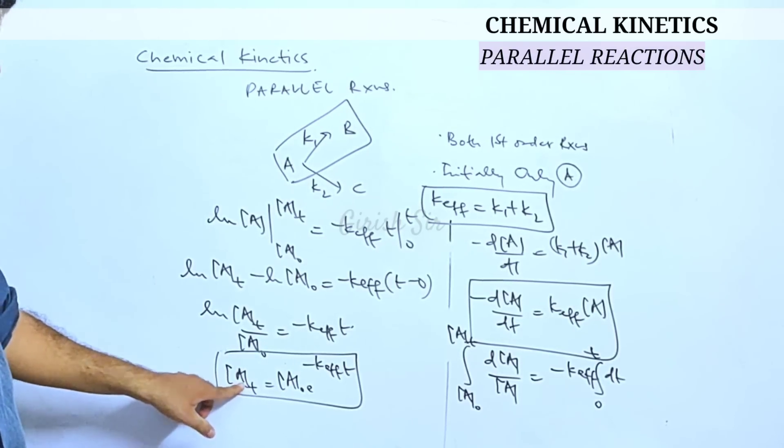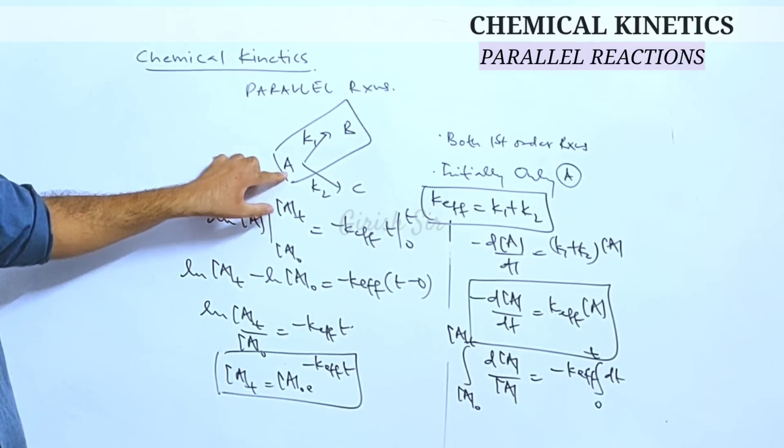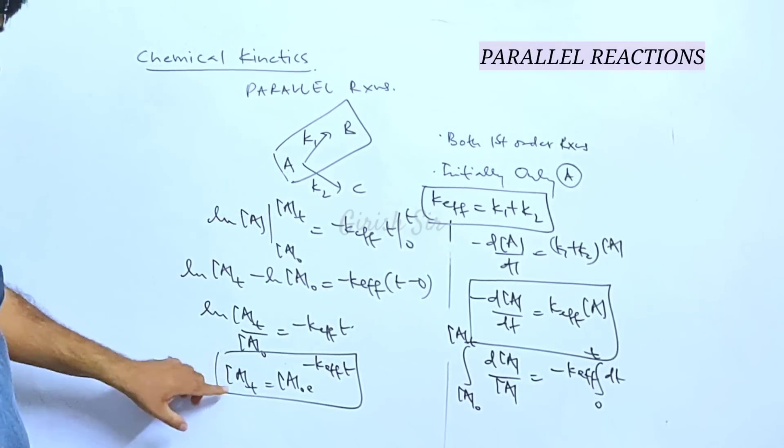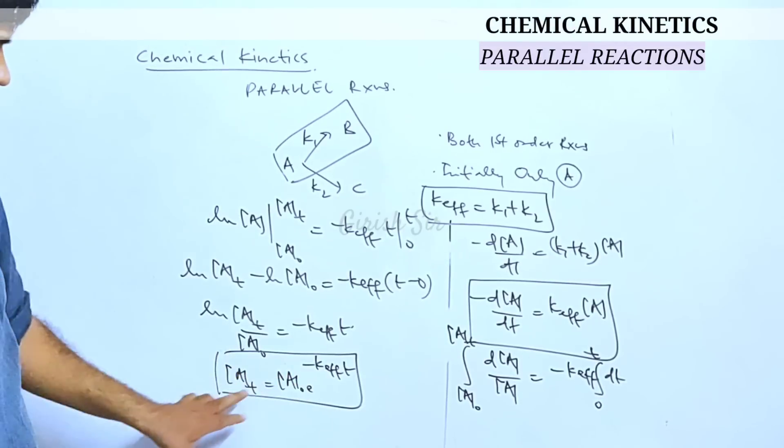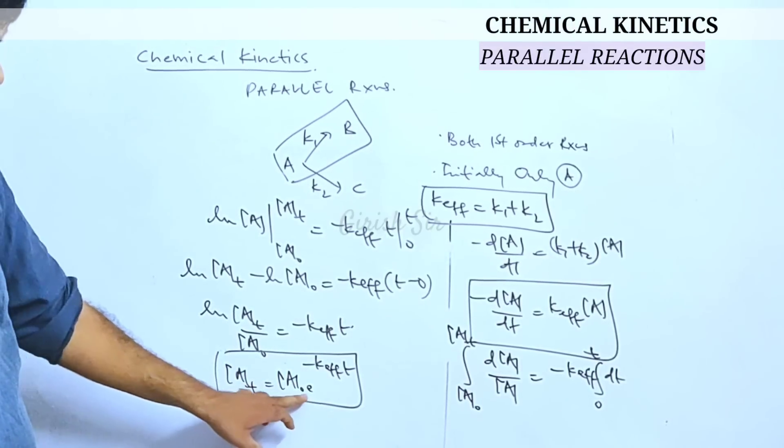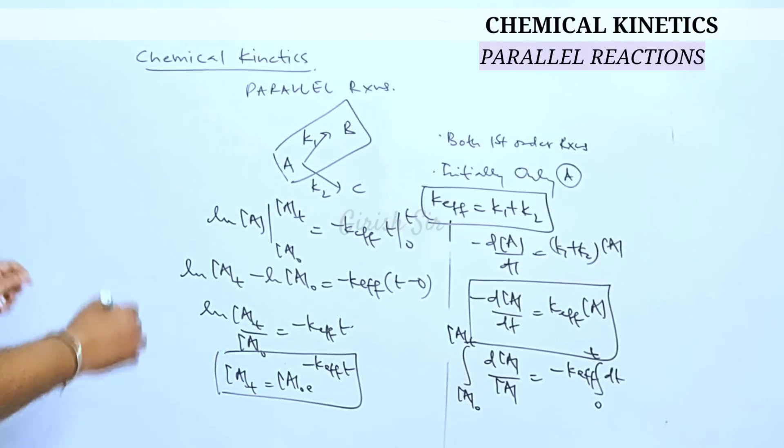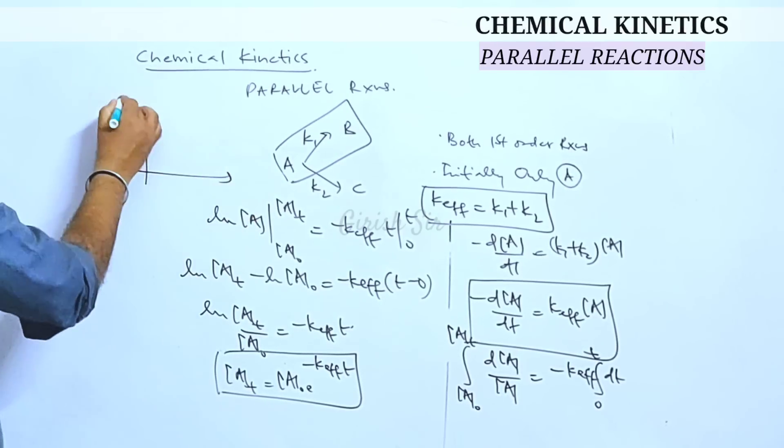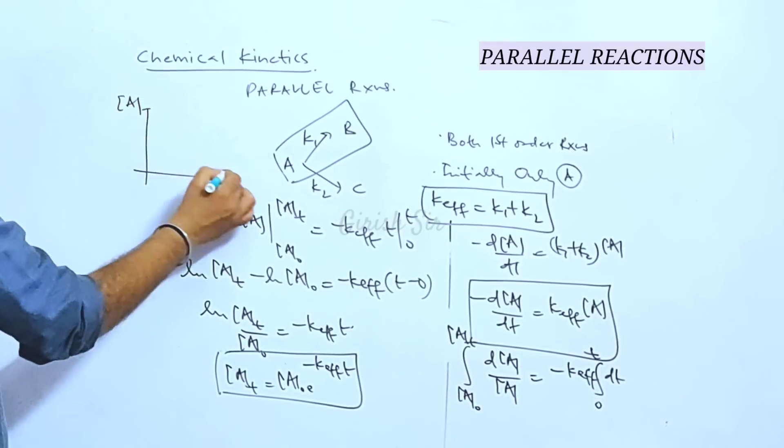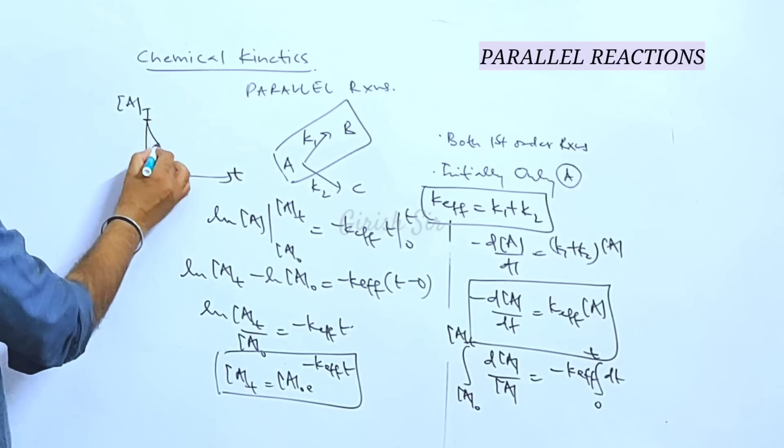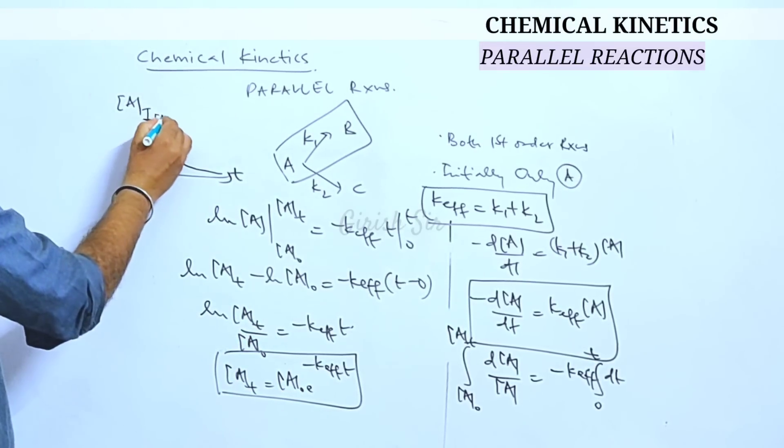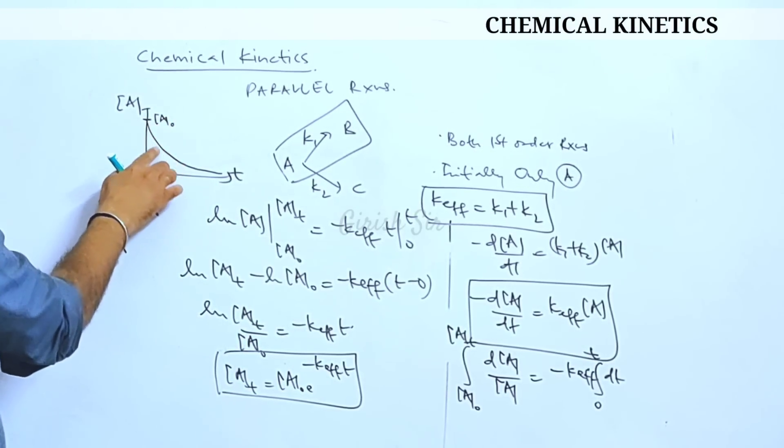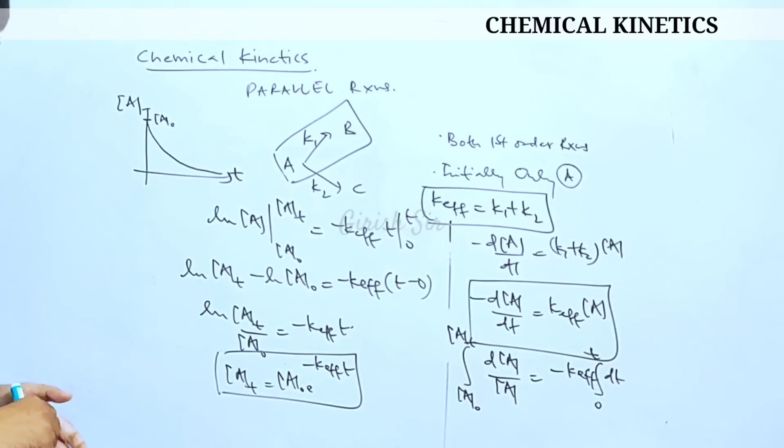You can see how concentration of A, this reactant, which is the common reactant for both reactions, how concentration of A varies with time. As time passes on, concentration of A will decrease exponentially. So this is how concentration of A should vary with time. It should be an exponential decrease as per this equation. Initial concentration being A naught and then it decreases exponentially.